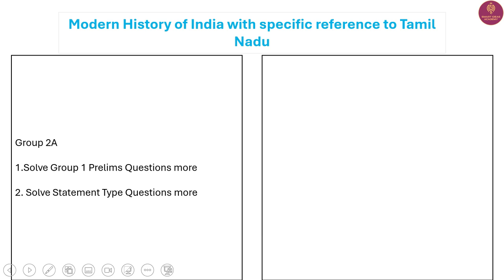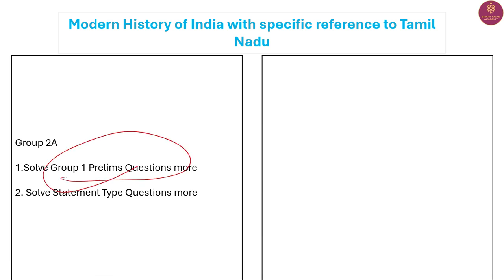If you look at Group 2A, you will solve Group 1 Prelims standard questions. You will see Group 2 questions from 2024. In Group 2 from 2015, there are about 6 questions available in 2024. You will solve Group 1 Prelims and DEO questions, ACF questions, and Mains exams for General Studies — focusing on maximum statement-type and single-line questions.